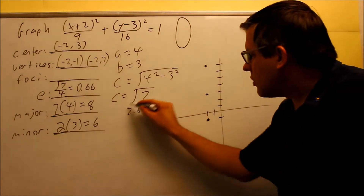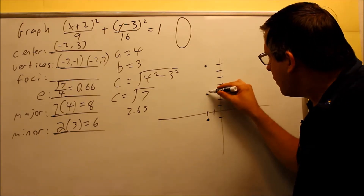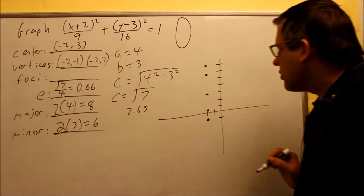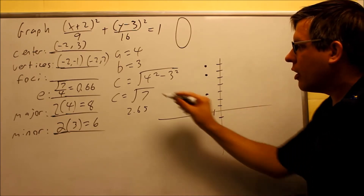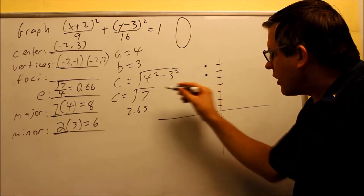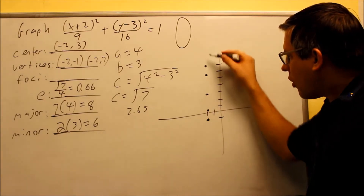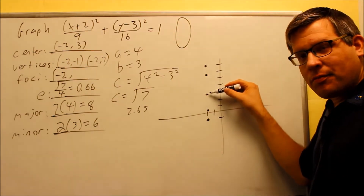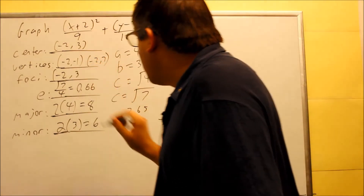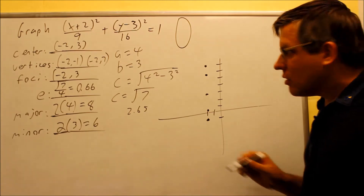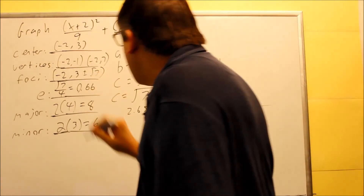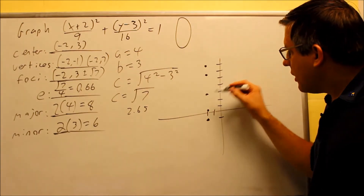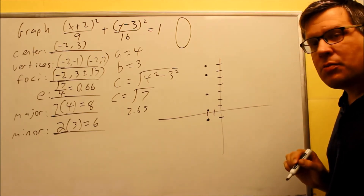For the foci, using the decimal value of 2.65, we go up 2.65 and down 2.65 from the center. All foci share the x-coordinate of negative 2. Taking the y value of 3 and adding or subtracting the square root of 7, the exact coordinates of the foci are negative 2, 3 plus or minus root 7. The decimal was used just to estimate where to plot them.